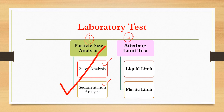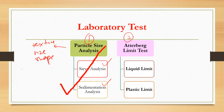When talking about particle size analysis, the assessment is based on texture — you are looking at the size and shape of the particles. You are able to quantify the percentage of coarse and also the percentage of fine. From sieve analysis, you can get the percentage of coarse and also percentage of fine.